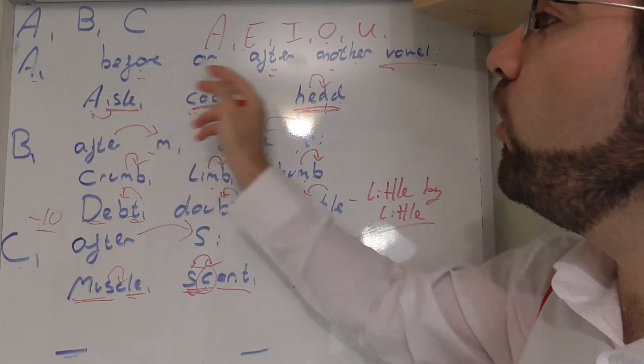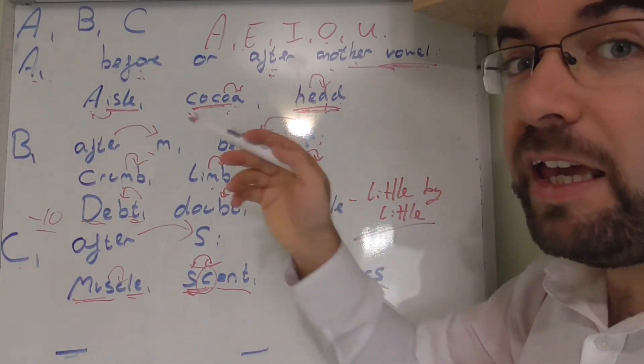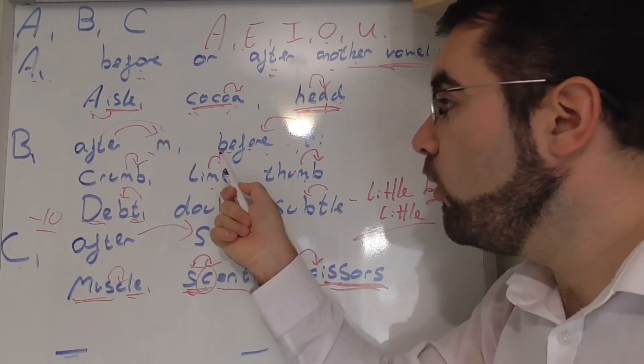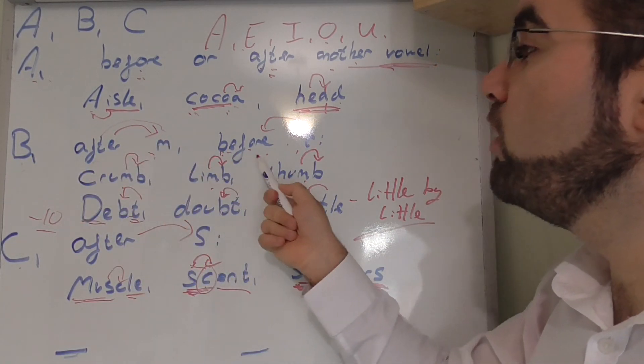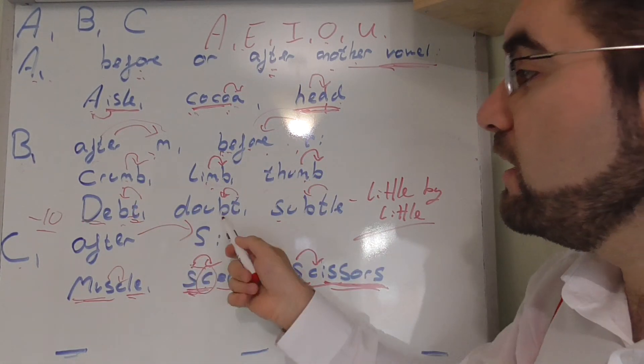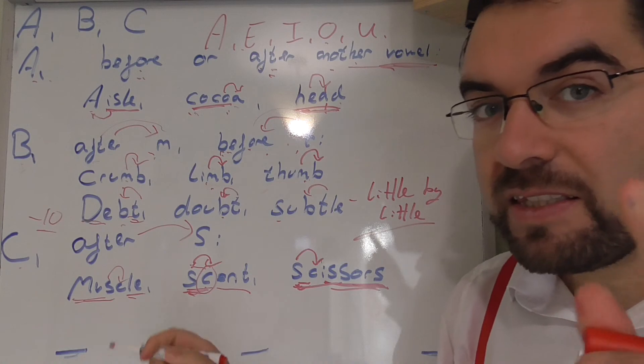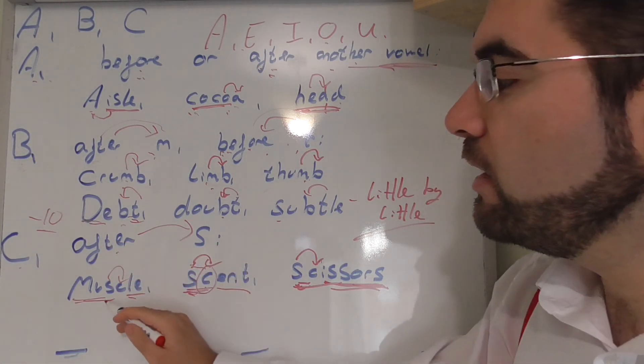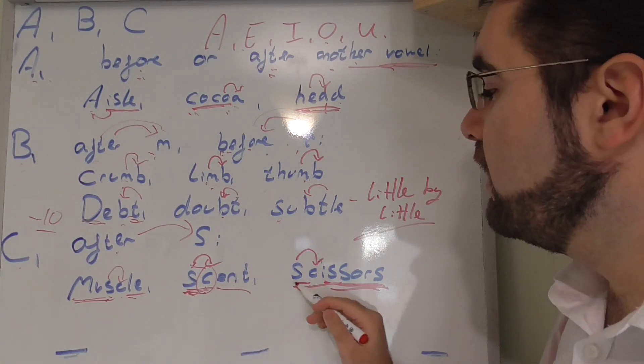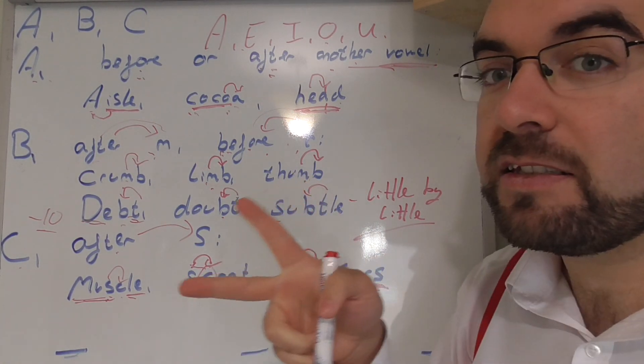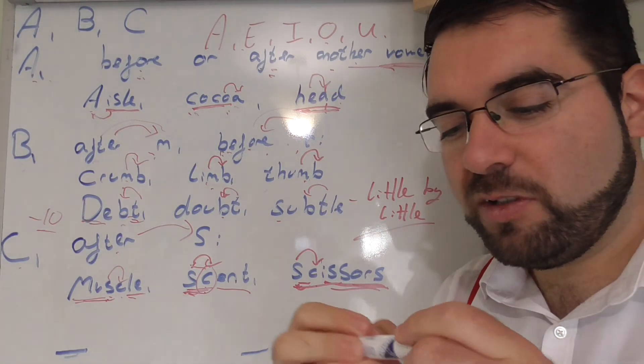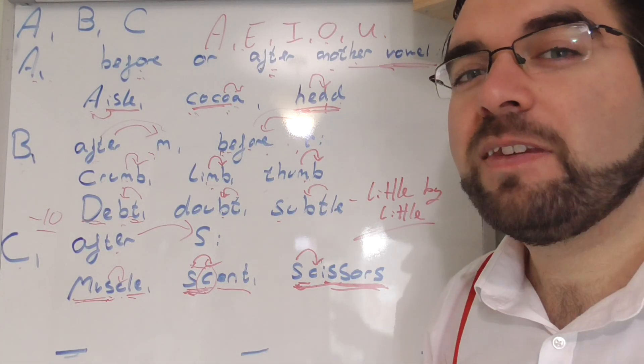So, A. Before or after another vowel. A-E-I-O-U. B. After M or before a T. Crumb. Limb. Thumb. Debt. Doubt. Subtle. C. After S. Muscle. S-C. Scent. S-C. Scissors. S-C. Scissors. How cool is that? Language explorers. Let's keep exploring.